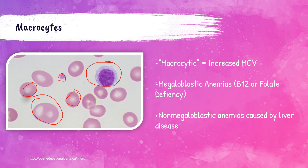Macrocytes can be present in patients with megaloblastic anemia, which is anemia caused by deficiencies of vitamin B12 and folate. There can be non-megaloblastic causes like liver disease or alcoholism that can cause macrocytes as well, but primarily you want to associate macrocytes with a vitamin B12 and folate deficiency.